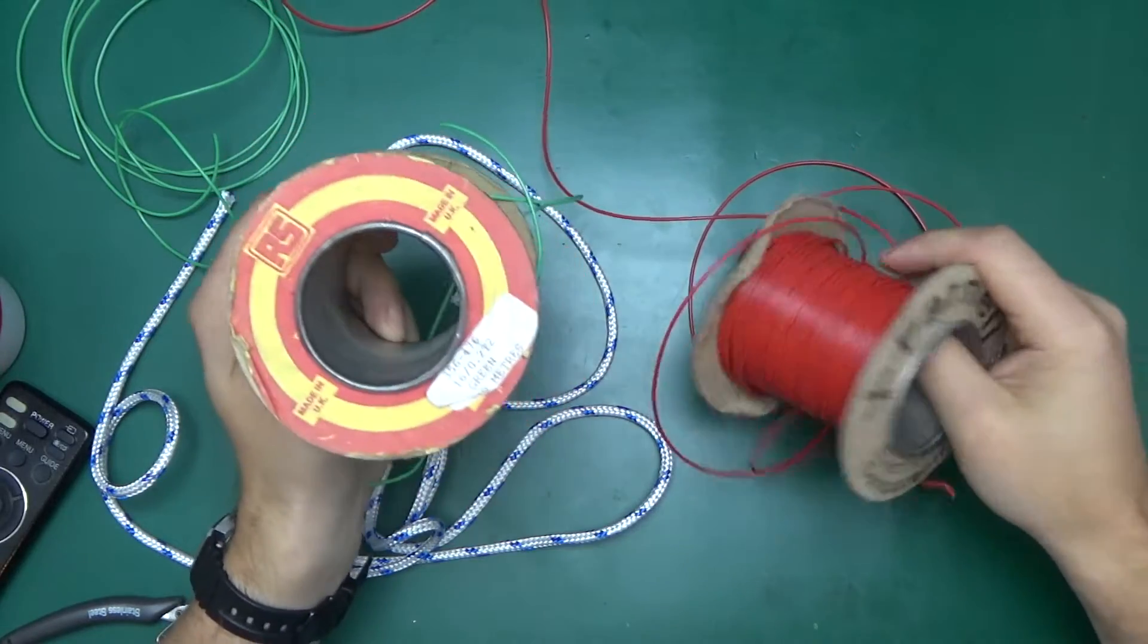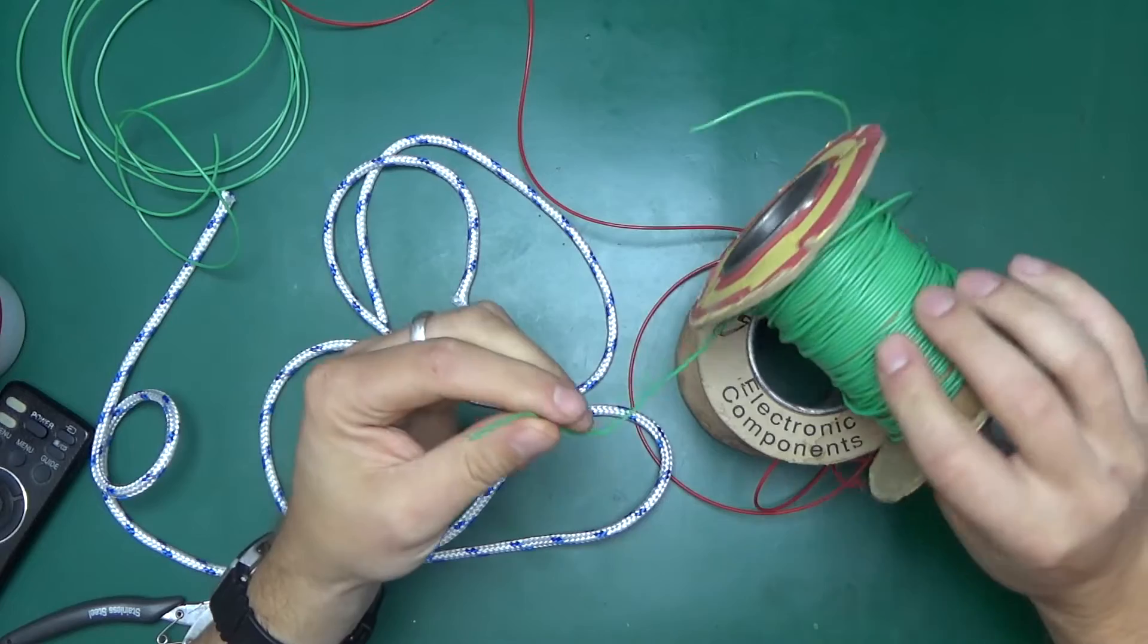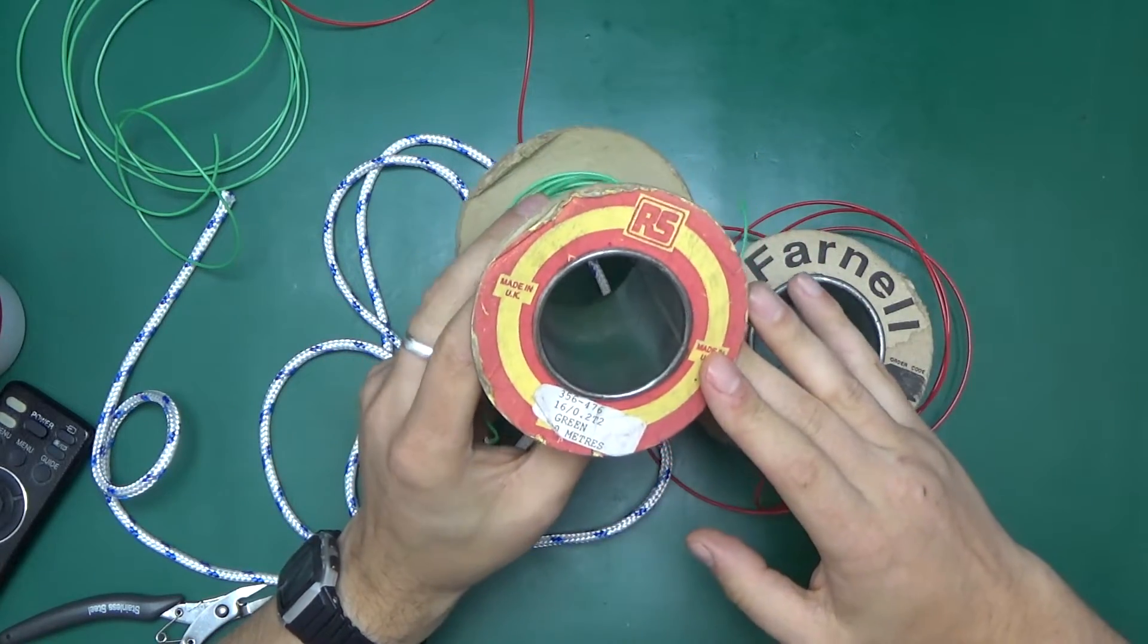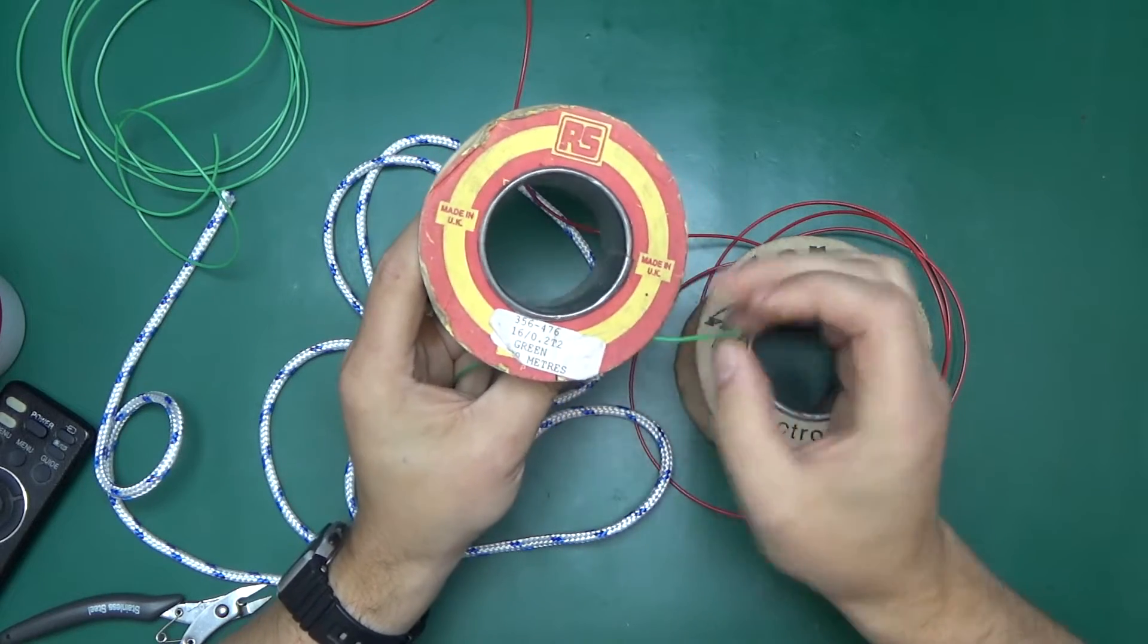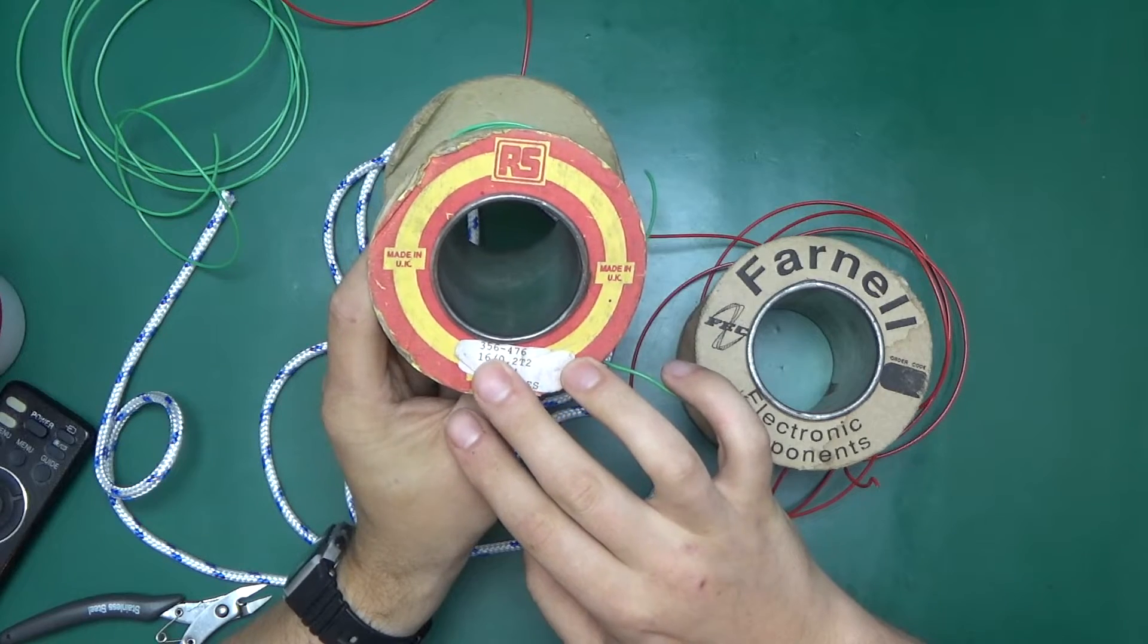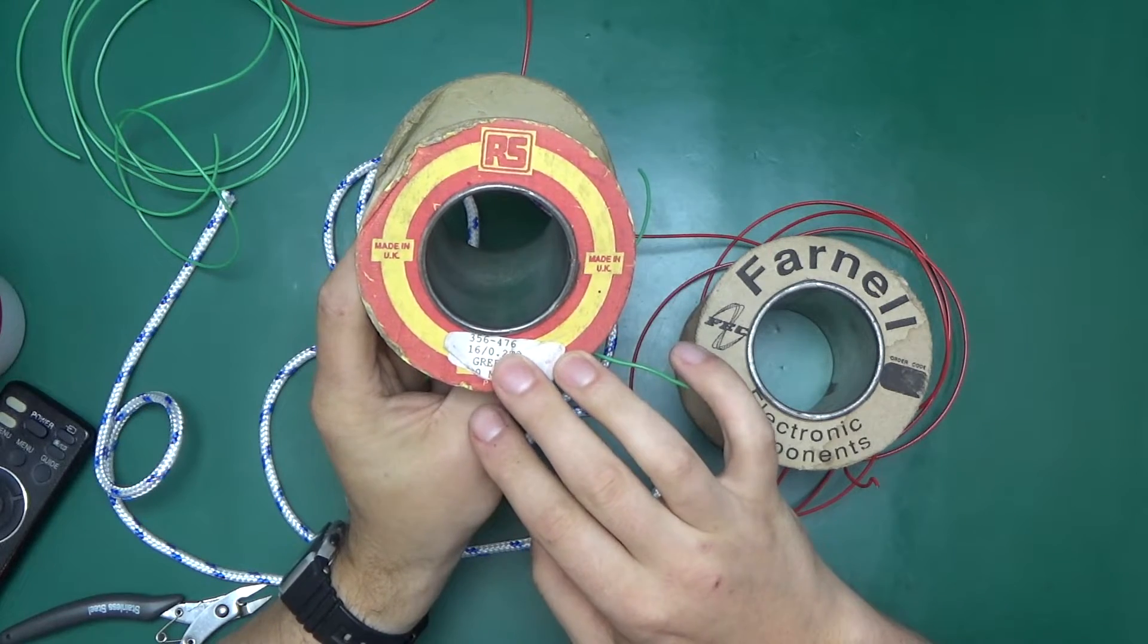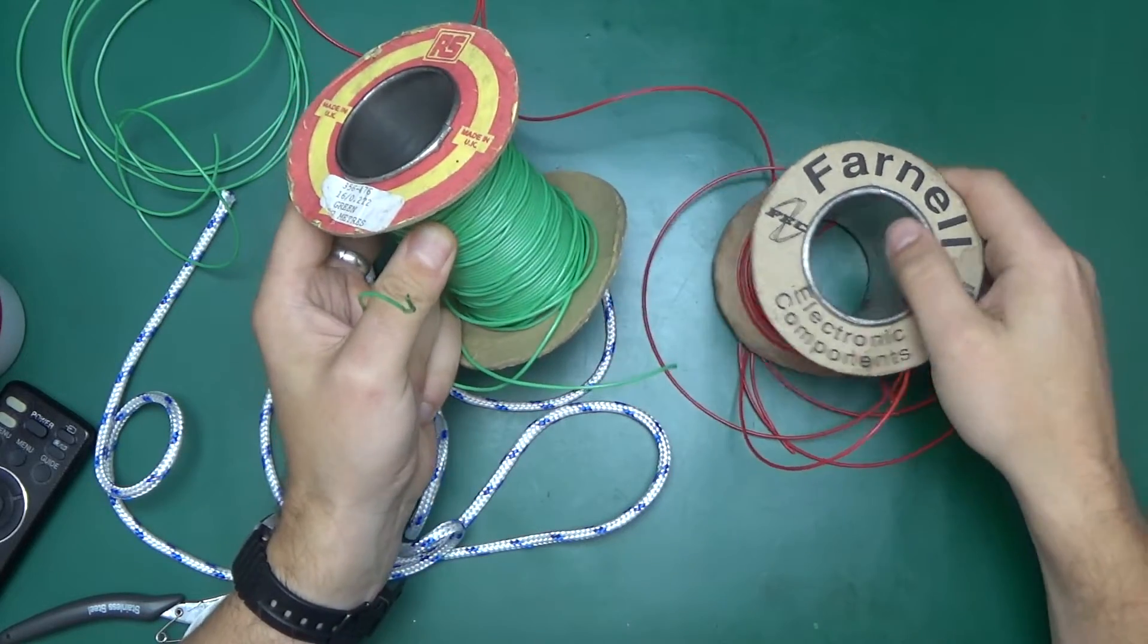As far as the wire for the current line, for the power delivery, ground and plus 5 volts, I will be using this. This is commonly known as equipment wire. From the datasheet I found, this appears to be half a millimeter squared. Here is the part number for RS Components 356-476. Black for ground, and red for 5 volts.